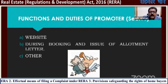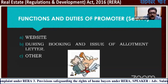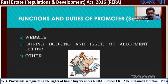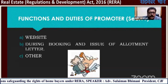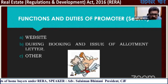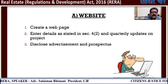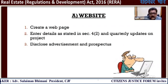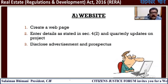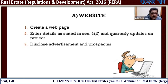Functions and duties of the promoter — Section 11. He has to maintain the website during booking and issue of allotment letter. Up to 10% collected, he must issue the allotment letter. After collecting 10%, he has to enter into an agreement. He must create a web page, enter details as stated in Section 4 Subsection 2, and provide quarterly updates on the project — every three months he has to update the progress.